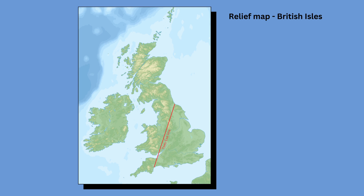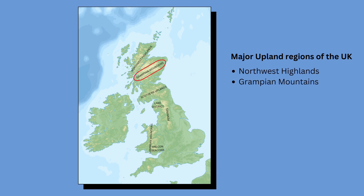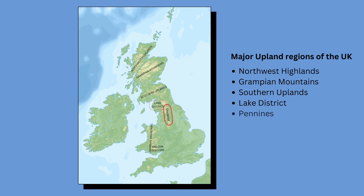You should try to be familiar with the names of upland regions in the UK. There are many named ones in the UK, but here are some of the major ones. There are the North West Highlands, the Grampian Mountains and the Southern Uplands in Scotland. In England, there is the Lake District and the Pennines. In Wales, there are the Cambrian Mountains and the Brecon Beacons.